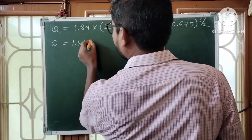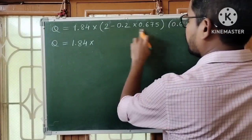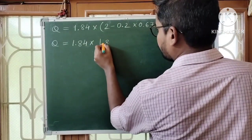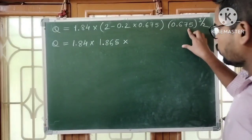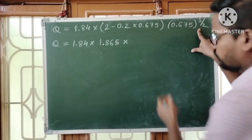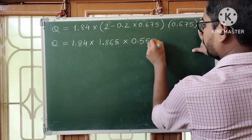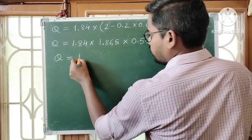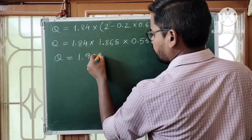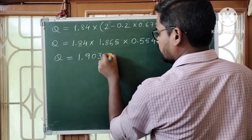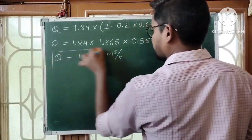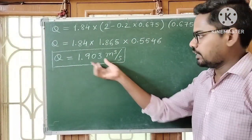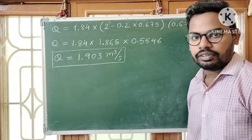Calculating: 1.84 into approximately 1.865, into 0.675 whole power 3/2 which is approximately 0.55. Multiplying all these values, discharge Q is approximately equal to 1.903 cubic meters per second. Therefore, discharge through the rectangular weir is 1.903 m³/s.